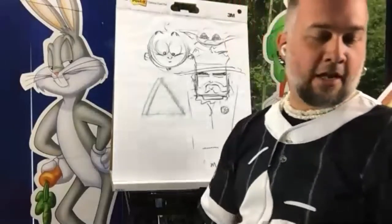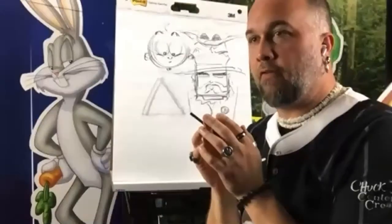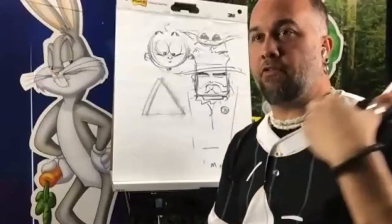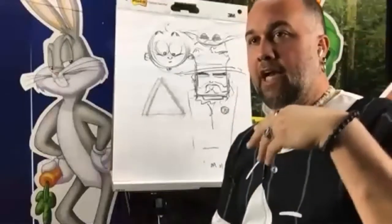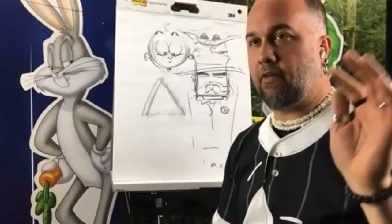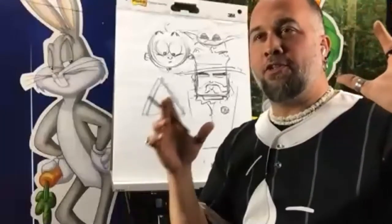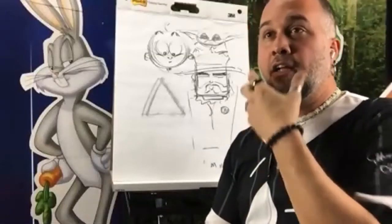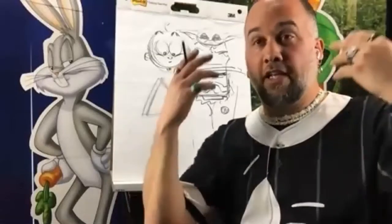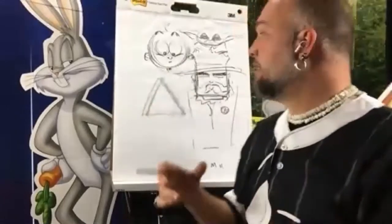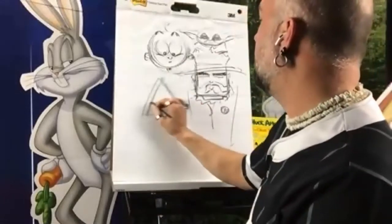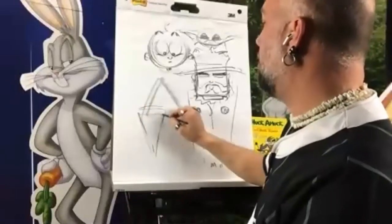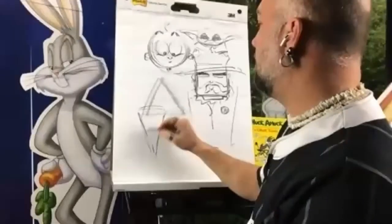Triangles — villainous, devious, mischievous. Think of Loki from Thor, Jafar from the animated Aladdin, Scar from the Lion King, or Darth Vader in that helmet — that's all kinds of triangles. Take your triangle — it can be elongated, however you want — and do something sinister. I'm going to draw a sinister-style character.